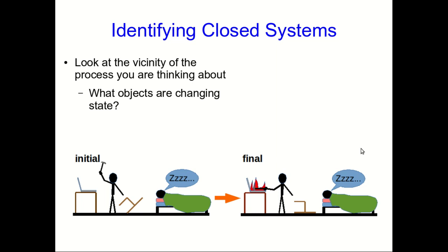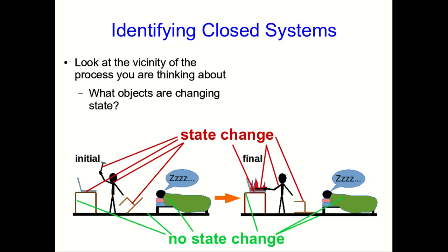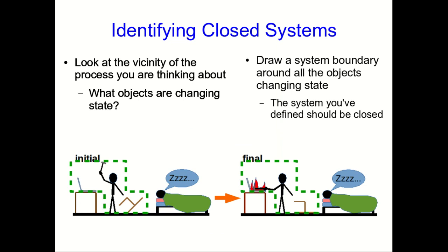Identifying a closed system can make analysis of a situation much easier. And in principle, it's easy to do, but in practice, it's often challenging. Look around at the process you're thinking about. What objects in its vicinity are changing state? Draw your system boundary just to include the ones that are changing state. If you've got them all, then you should have just defined a closed system.